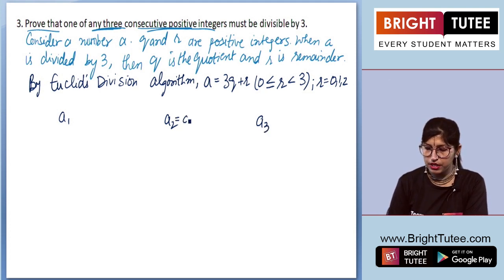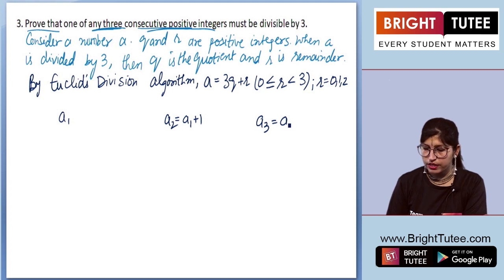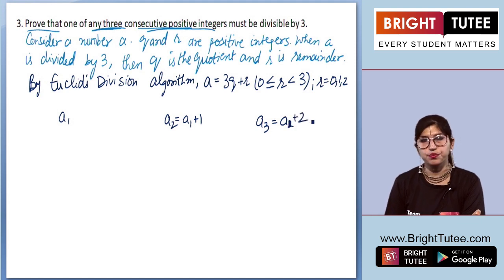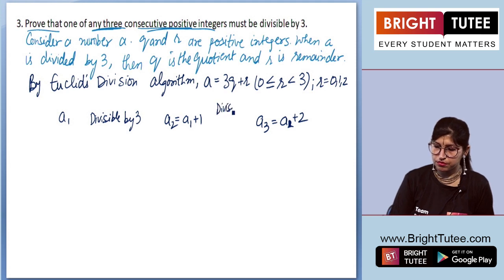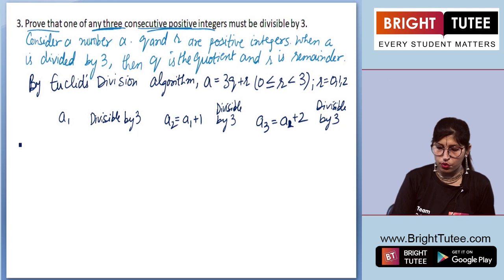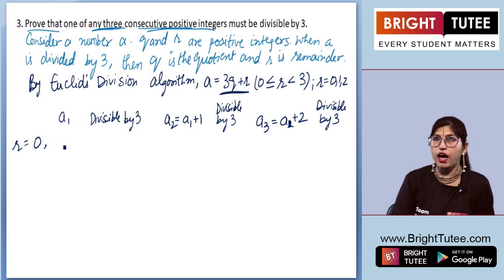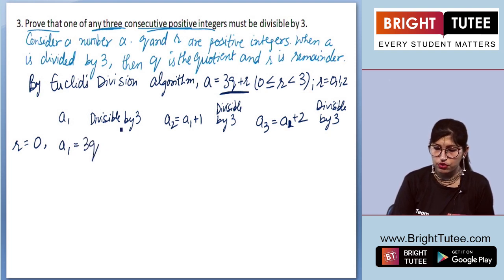Since a1, a2, and a3 are consecutive positive integers, a2 will be a1 plus 1, and a3 will be a1 plus 2. Now let's see if they are divisible by 3 or not. When r equals 0, a1 will be 3q plus 0, which is just 3q. That is divisible by 3, since it is 3 times any number.